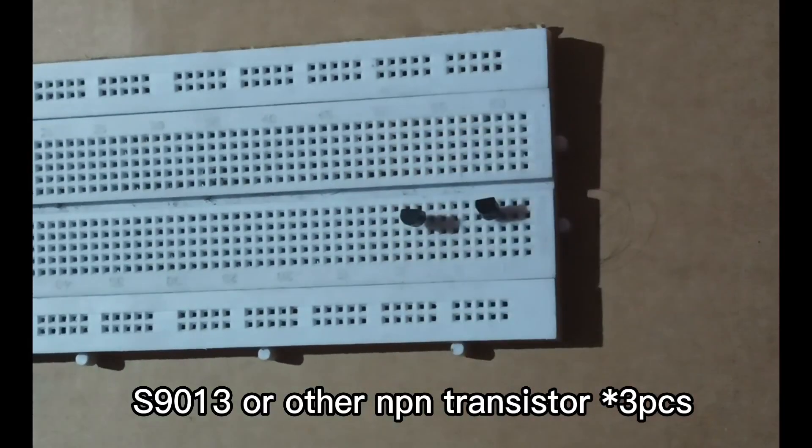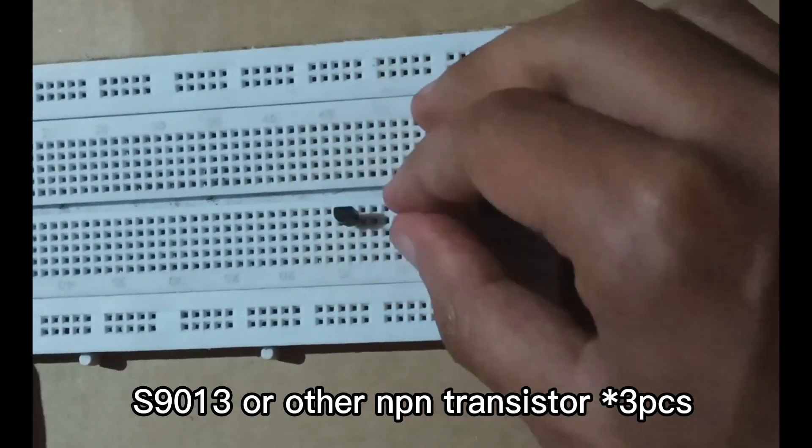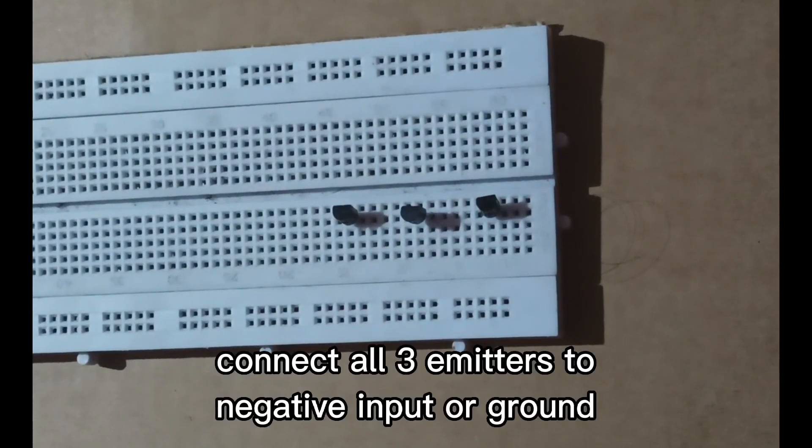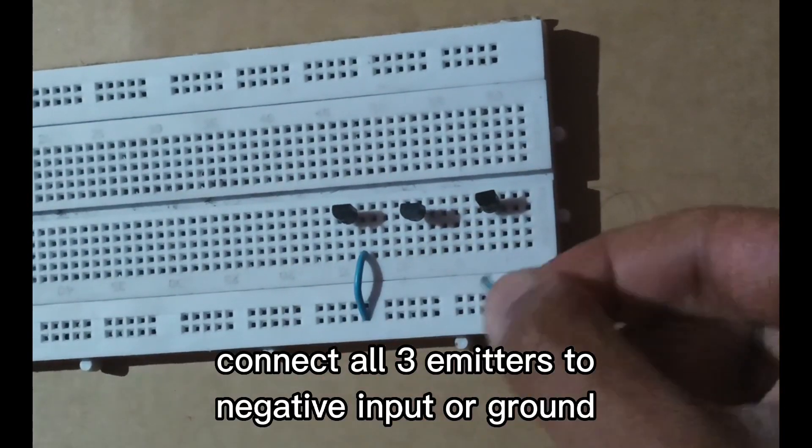S9013 or other NPN transistor, 3 pieces. Connect all three emitters to negative input or ground.